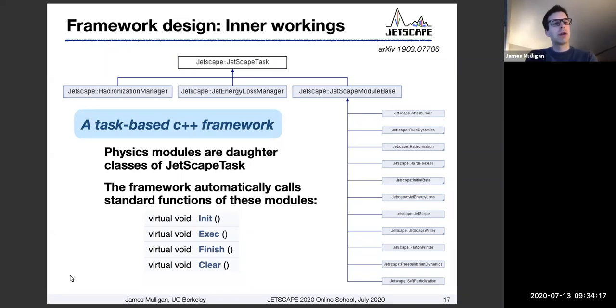So the framework itself, it's a task-based framework written in C++. And so what this means is that there is a set of physics modules. These are defined in the right side of this diagram, different types of physics modules for different pieces of the event evolution. These are daughter classes that inherit from a module base class, which inherits from something called Jetscape task, which is the overall root task of the framework.